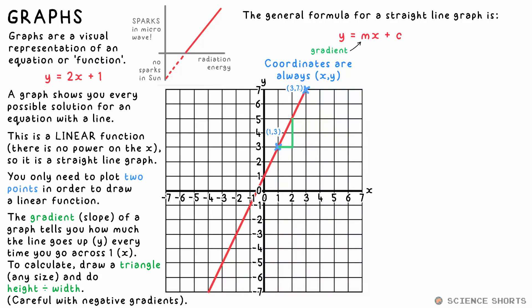The gradient is always the height of the triangle divided by its width. Up divided by across. That's changing y divided by changing x. Let's keep it simple though. I've just made it one across. So two divided by one is two. So the gradient is two.